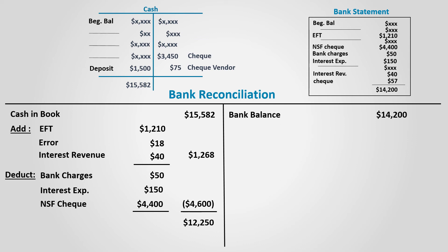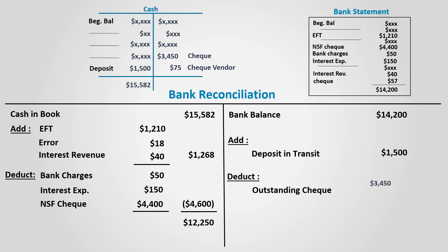On the bank side, we will still have to update the information as well. We will add the deposit in transit since the cash is already deposited in the bank and the balance has already increased but didn't show on the bank statement yet. This will eventually appear as a deposit when the new bank statement is issued, assuming all checks will clear. We also deduct checks that the business had issued to vendors that have not been cashed yet, but eventually will be cashed — this will reduce the balance per the bank statement. By adding and subtracting the adjustments on each side, both sides balance at $12,250.